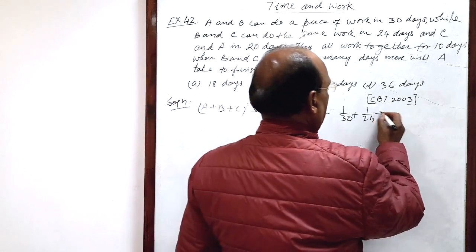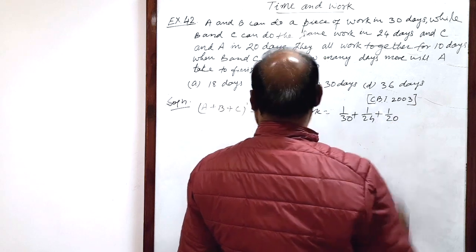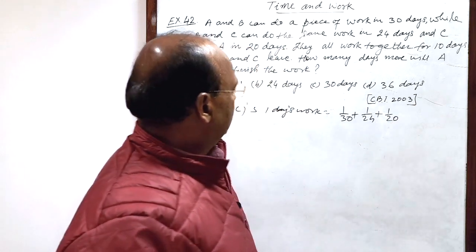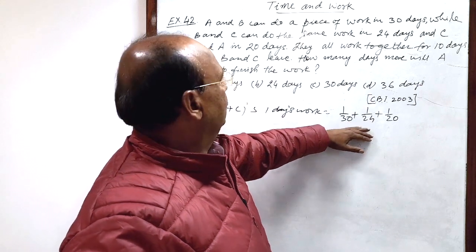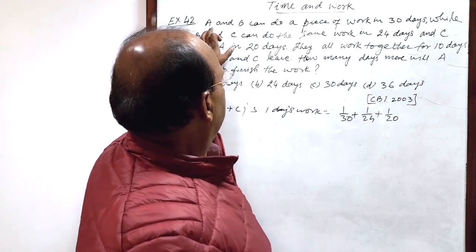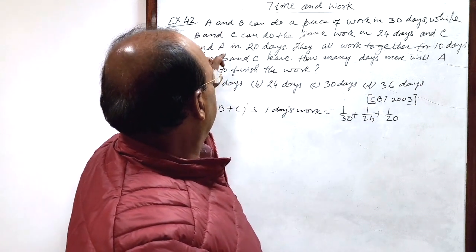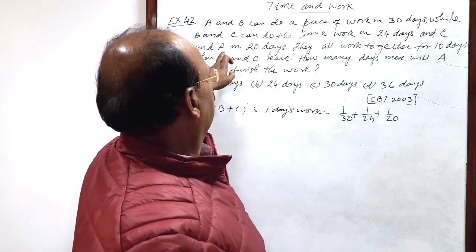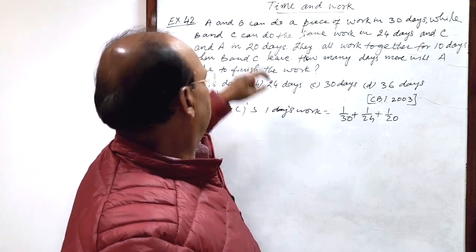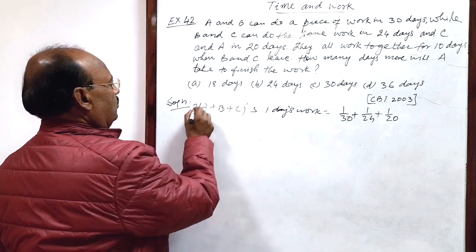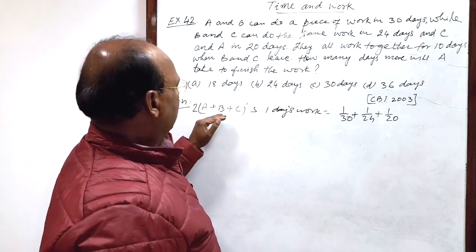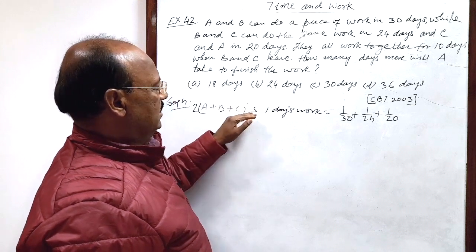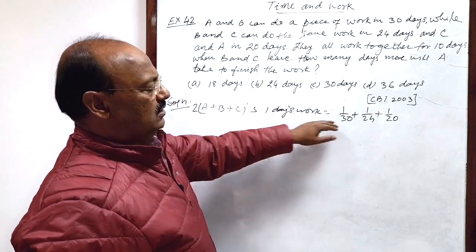And C and A in 20 days. So, in one day, 1 by 20. But when we are adding this amount of work done, you see A is coming twice, A is here as well as A is here, C and A. Similarly, B is twice, C is twice. So, we will multiply it with 2. So, this is 2 times of A plus B plus C's 1 day's work this much.